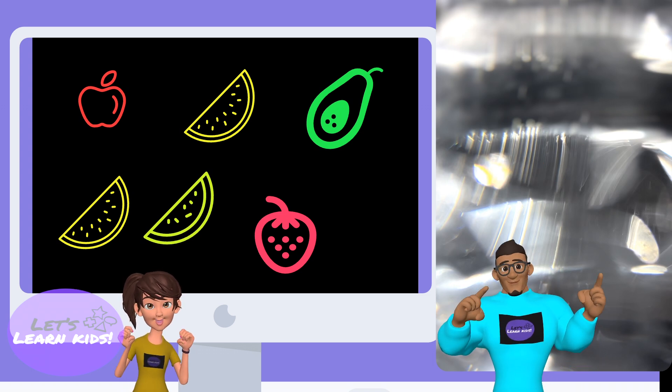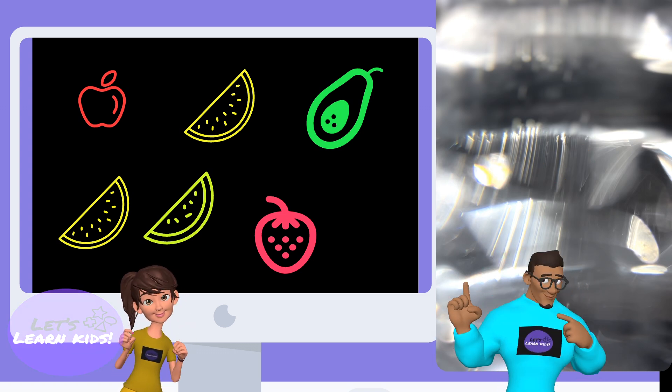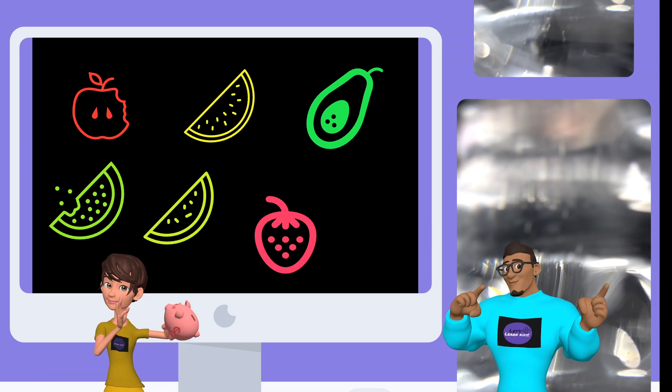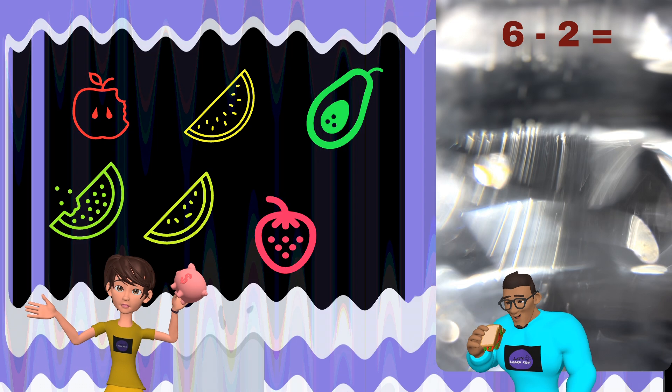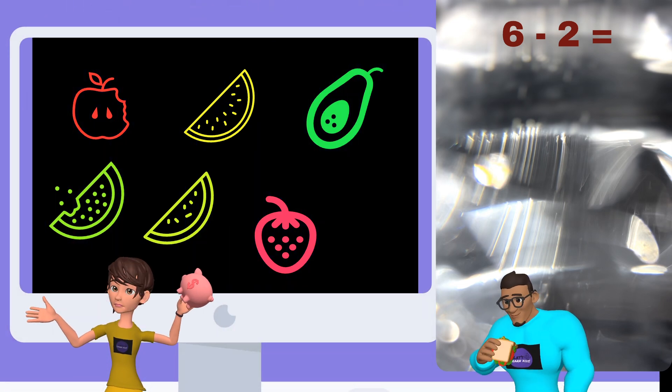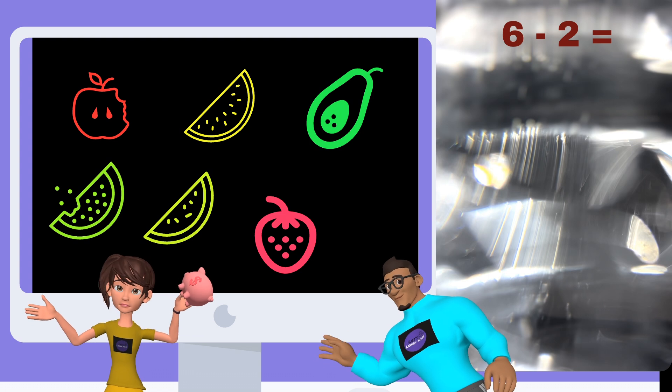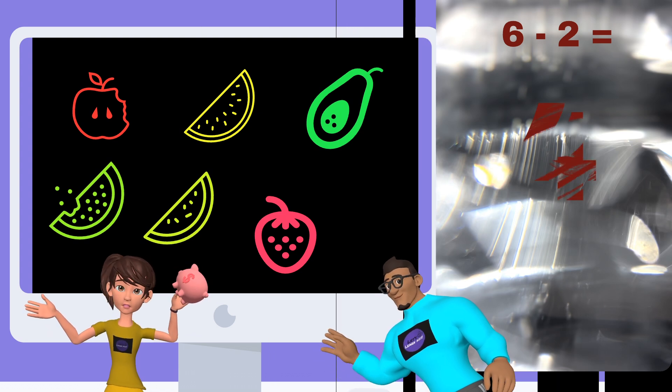So now what if I take a bite of one apple and Manny takes a bite of the watermelon? That would be six minus two. How many fruits are left without a bite? Good job, that's correct. The answer is four.